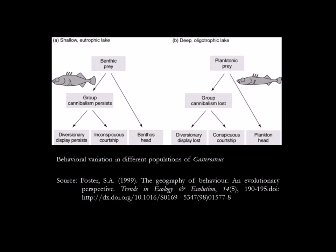This last example was added to show that phenotypic variation can also be behavioral in nature, aside from the physiological and morphological differences demonstrated earlier. In the study of Foster in 1999, different populations of Gasterosteus have different behaviors depending on their habitat. Populations living in shallow eutrophic lakes often feed on benthic prey and form foraging groups that cannibalize younger members of the population. Organisms living in deep oligotrophic lakes have less benthic prey and feed on planktonic prey instead, and as a result, the foraging groups that cannibalize younger members are lost.